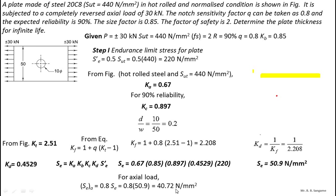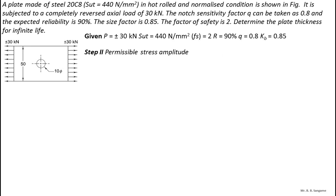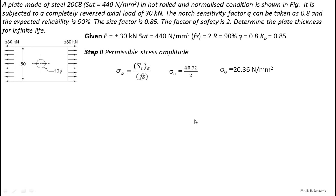Next, I calculate the permissible stress amplitude. The formula is: σa = Sea / factor of safety = 40.72 / 2 = 20.36 N/mm². This is designated as Equation A.